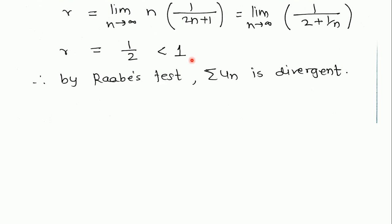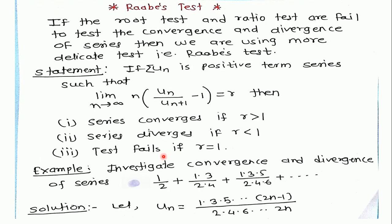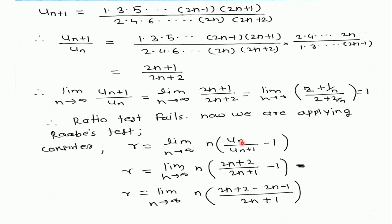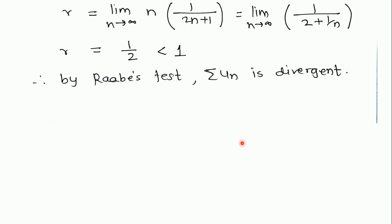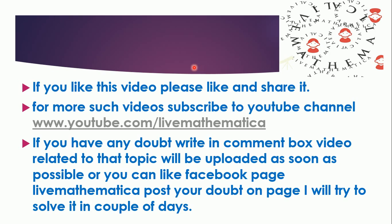We find the limiting value is 1/2, which is less than 1. Therefore, by Raabe's test, since R = 1/2 < 1, the series is divergent. In this way we can apply Raabe's test.